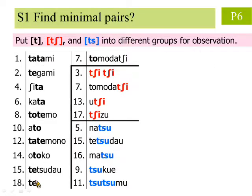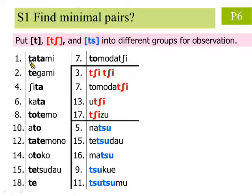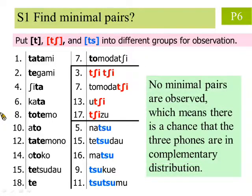Step 1: We try and find the minimal pairs. Here we have divided the words into three groups according to the three consonant sounds. In the Japanese language, a consonant followed by a vowel is one syllable. So here the three consonant sounds are marked in bold, along with the vowels that immediately follow, and each sound is labeled by a different color. We see that no minimal pairs are observed, which means that there is a high chance the three phones are in complementary distribution.